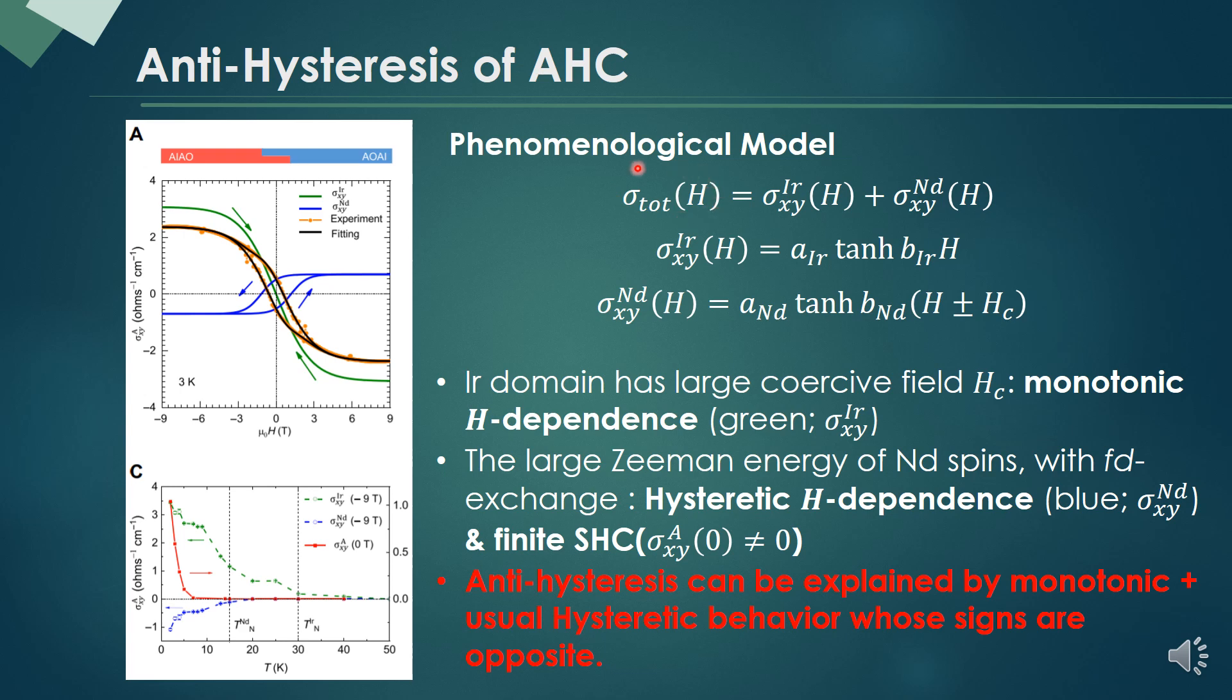The anomalous Hall conductivity can be divided into the iridium spin ordering contribution and the neodymium spin ordering contribution. It has been known that the iridium spin has a large coercive field by itself. Therefore, we just use some monotonic H-dependence, which is the green line here.